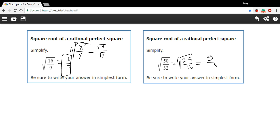And we have 5 fourths as our answer. So that's a little bit of work with taking the square root of a rational perfect square.